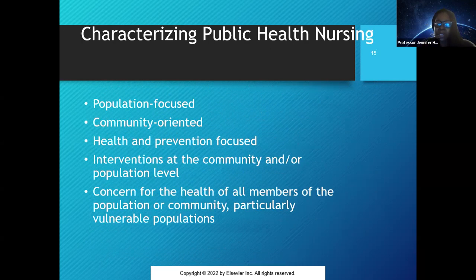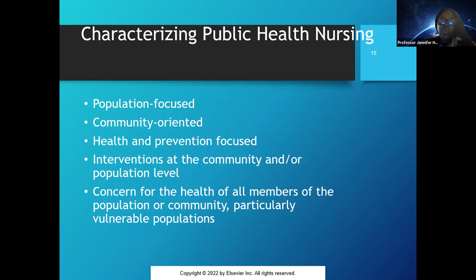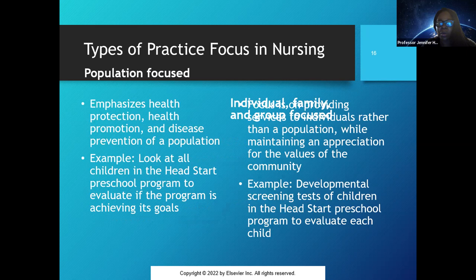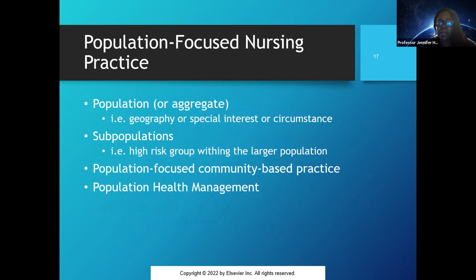This slide describes characteristics that distinguish public health nursing as a specialty. It is population-focused, community-oriented, and health and prevention-focused, with interventions at the community level rather than just the individual. We're concerned with the health of all members of our population. Community-oriented nursing can focus either on the community or on individual families and groups, looking at the population as a collection of individuals in a defined geographic area — for example, a reservation.